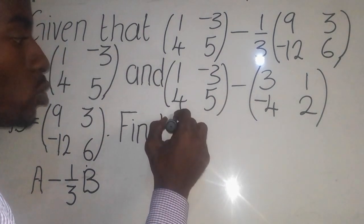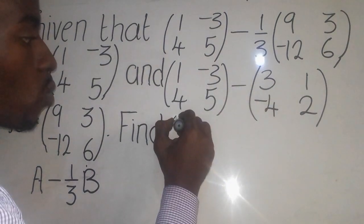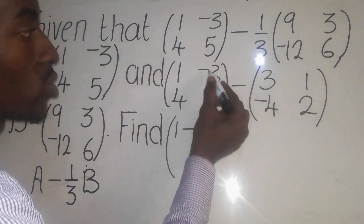Now from here, we need to have the corresponding values. So it will be 1 minus 3, so 1 minus 3 there. We get now this one, negative 3 minus 1.